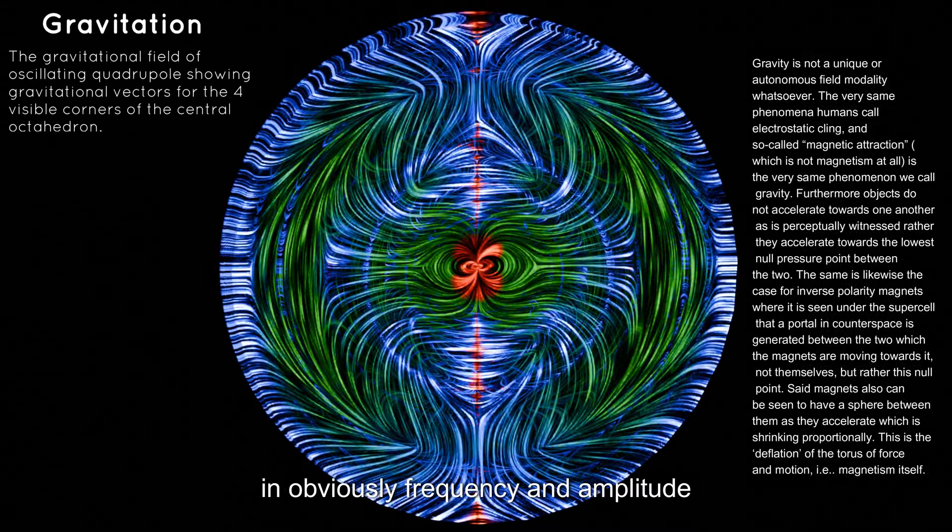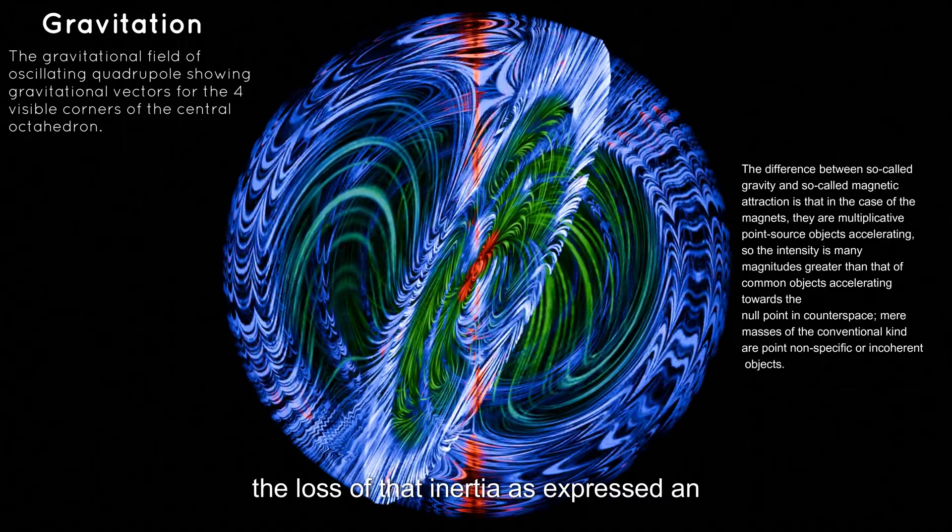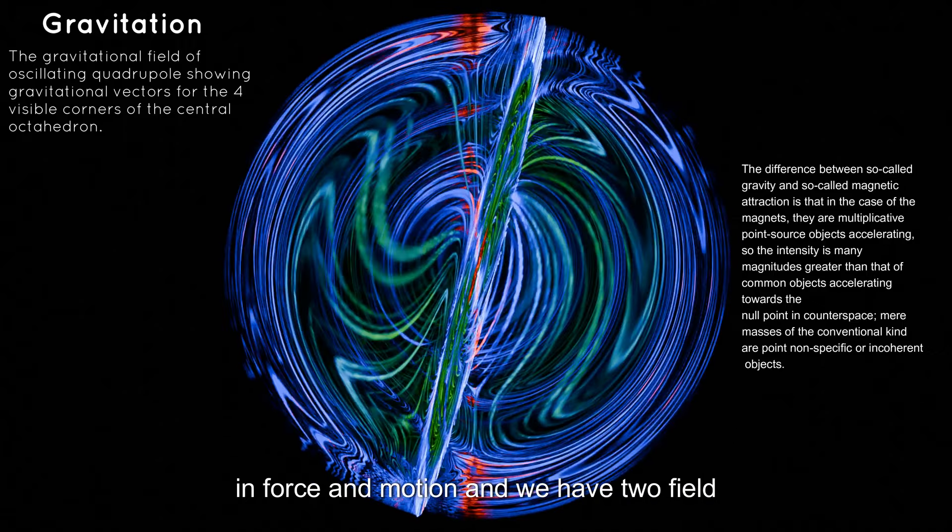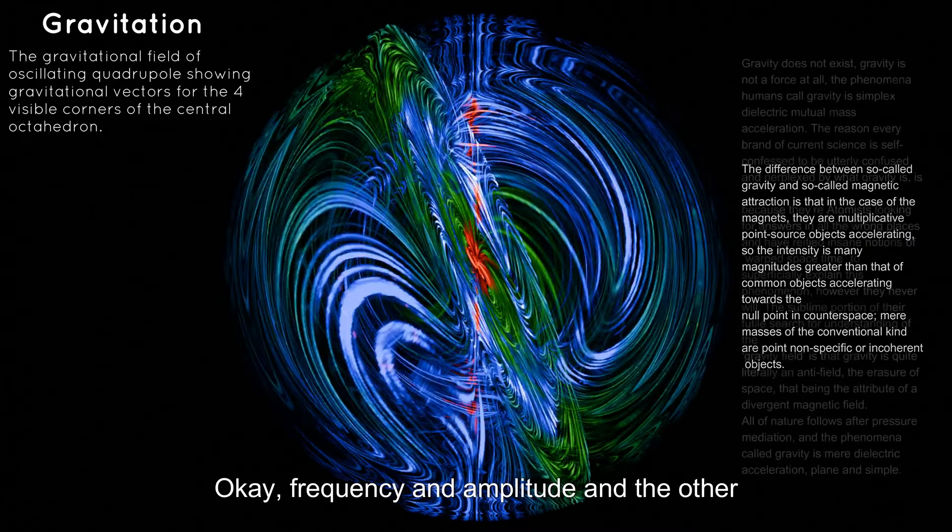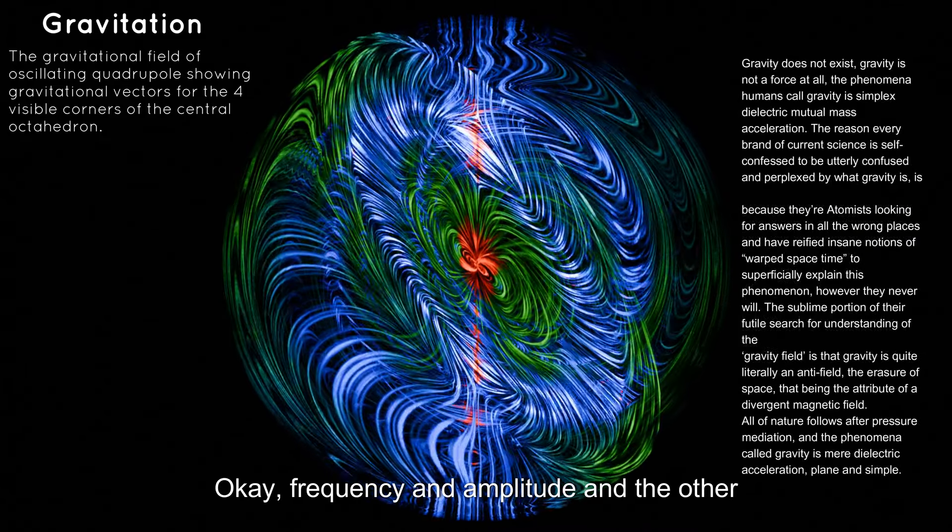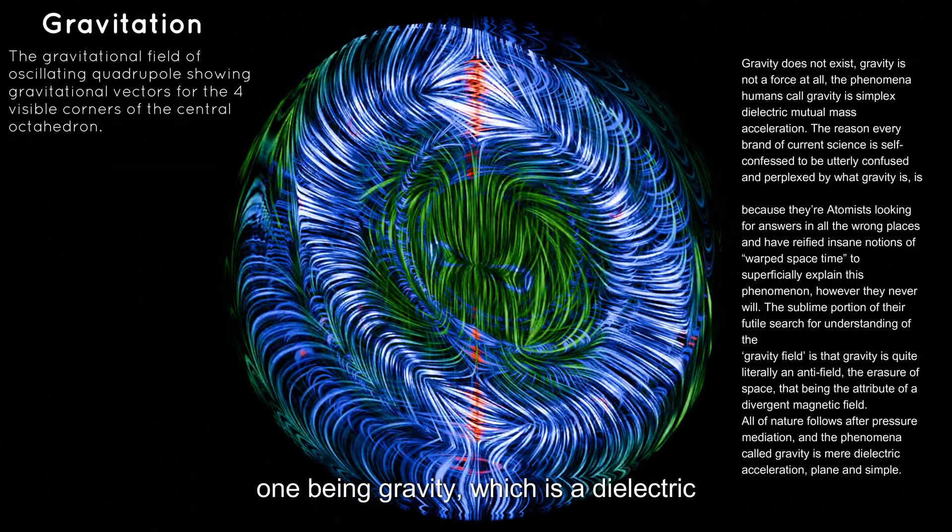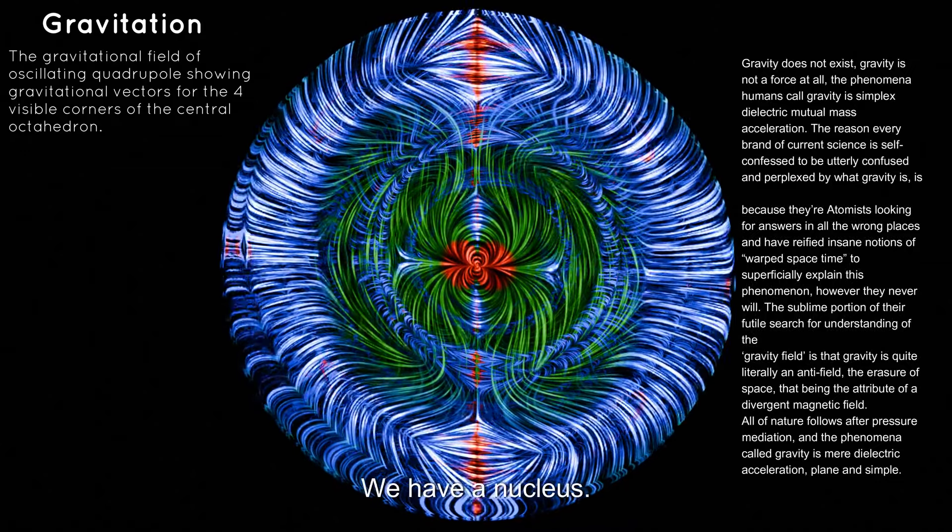So we have one field, one release of that field's potential, i.e. the loss of that inertia, as expressed in force and motion, and we have two field modalities, one being electricity, frequency and amplitude.